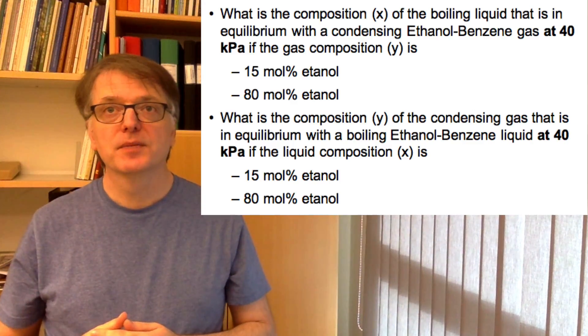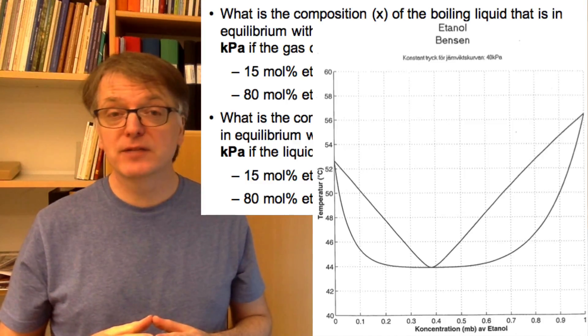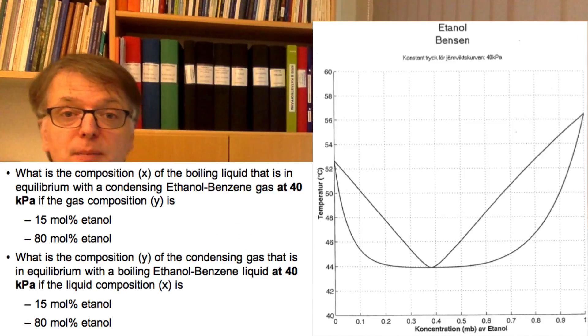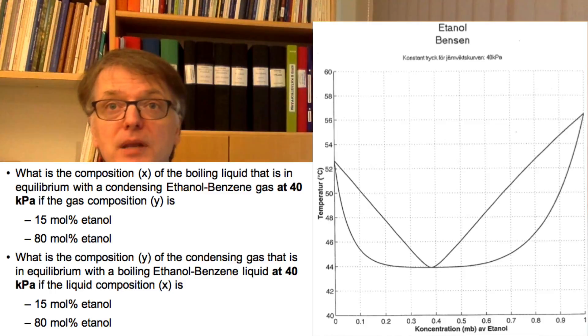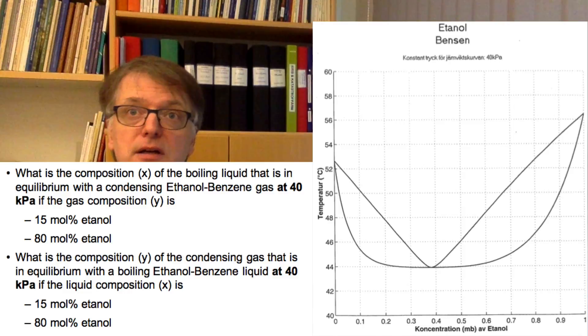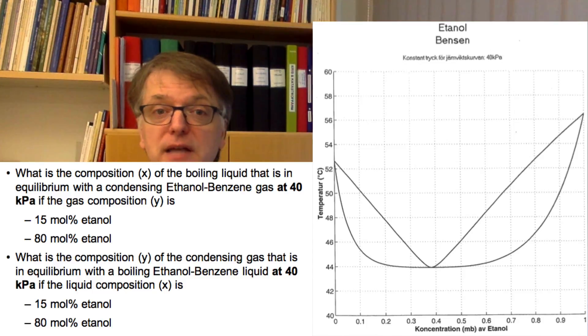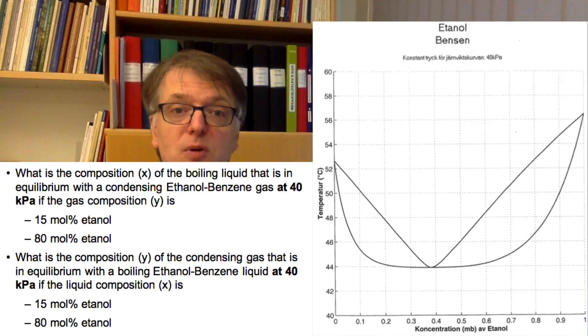Okay, try to solve the following task. Interpret a tx diagram for ethanol-benzene at 40 kilopascal. That diagram has a boiling point minima and you should find in the first two tasks what the composition of the boiling liquid is that is in equilibrium with the condensing gas that has either 15 mole percent ethanol or 80 mole percent ethanol.